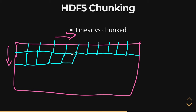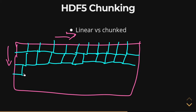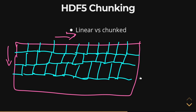HDF5 will throw these blocks around in any order it wants, and it keeps a binary tree index of every single one of the locations of each of these little chunks. So when you go to read your 1.5 terabyte dataset but you only need a tiny portion — say, a particular region of your two-dimensional matrix — if it's a chunked dataset, h5py will index through this binary tree, find those particular chunks associated with the indexes you're looking for, and pull just those out. It will not bother reading any of the other data you're not asking for.